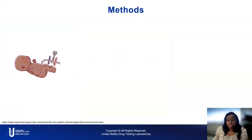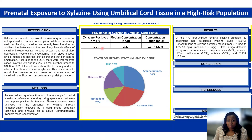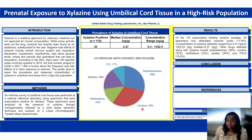Of the 170 presumptive positive fentanyl samples, 30 of the specimens had detectable levels of xylazine, representing about 17.6 percent of the samples. The concentrations of xylazine detected spanned a wide range, from as low as 0.3 nanograms per gram up to 1,322 nanograms per gram. The median concentration of xylazine was 2.27 nanograms per gram. Other drugs detected along with xylazine included amphetamine at 50 percent, cocaine at the highest at 53 percent, opioids at 30 percent, methadone at 23 percent, and THC.